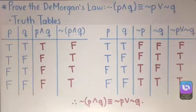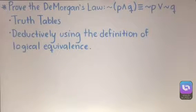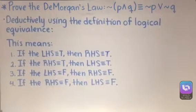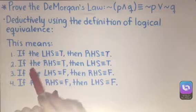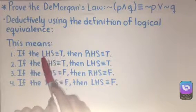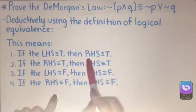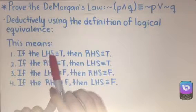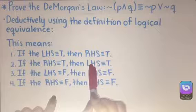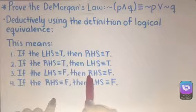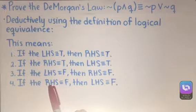Now what we need to do next is prove it using the definition of logical equivalence. By deductively using the definition of logical equivalence, we will be solving it four different ways. We need to solve these conditional statements to make sure the argument is valid: (1) if LHS is true then RHS is true; (2) if RHS is true then LHS is true; (3) if LHS is false then RHS is false; and (4) if RHS is false then LHS is false.